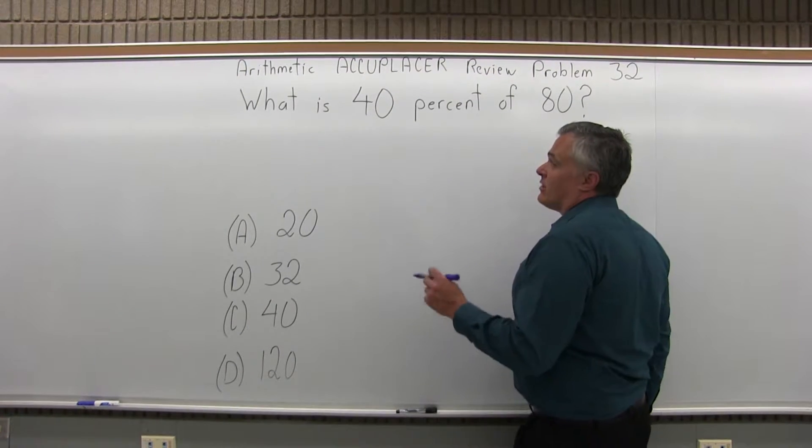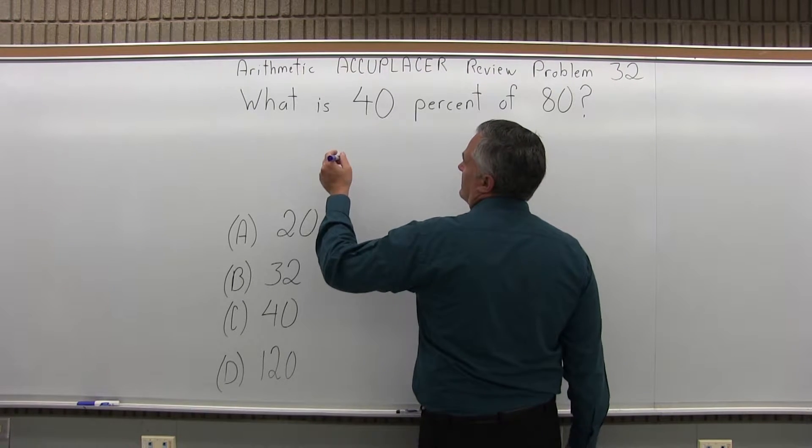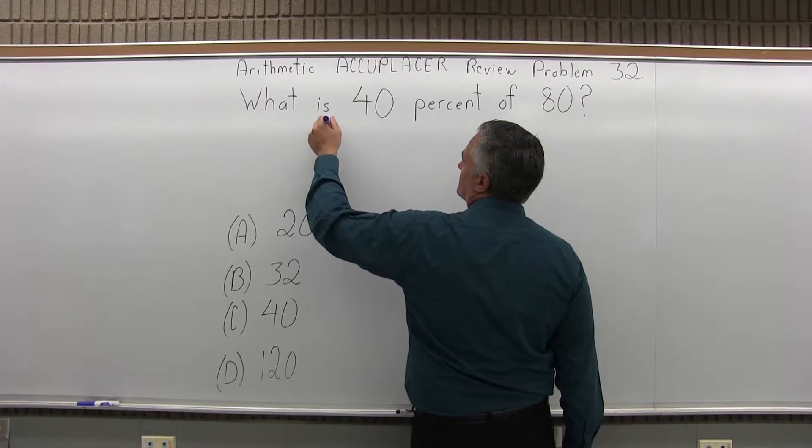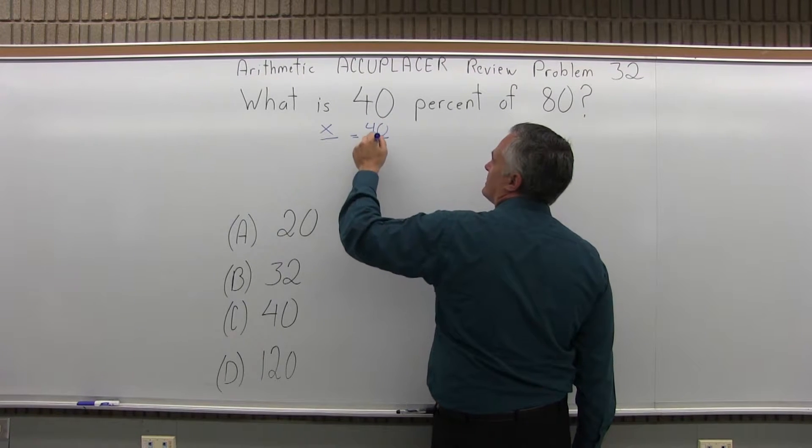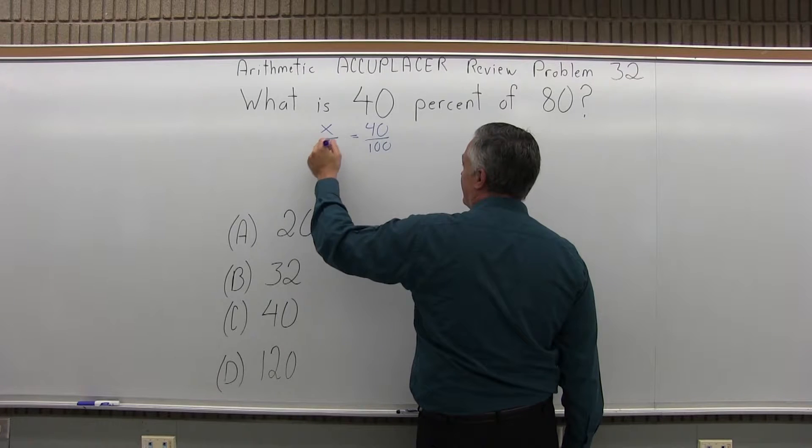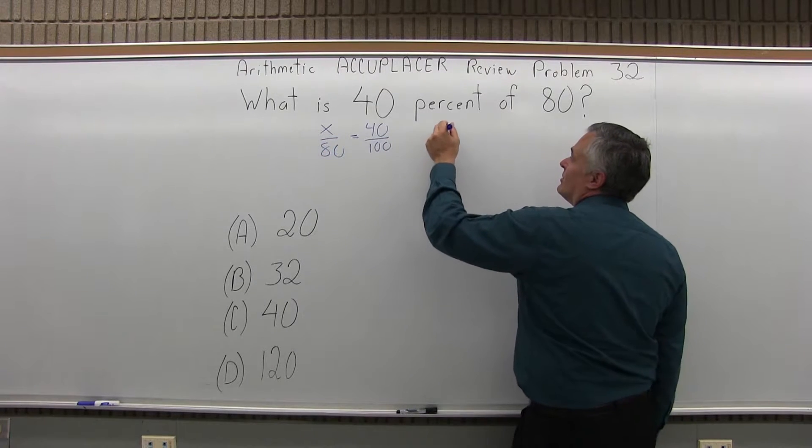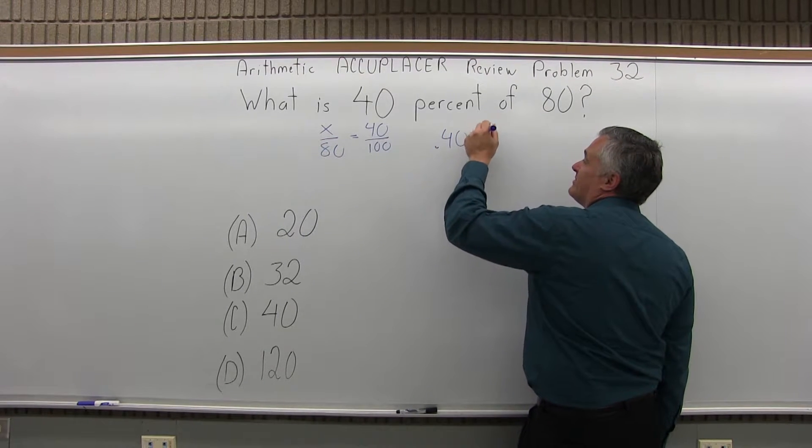So there are a variety of ways to do this. One method is, what is 40% of 80? You could do 0.40 times 80.